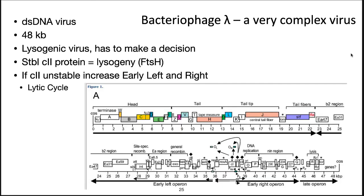Our third example is bacteriophage lambda. Bacteriophage lambda is the classic example of a lysogenic virus. Similar to T4, it also has early, middle, and late gene expression. However, early proteins decide what path the virus will venture down — lytic or lysogenic.